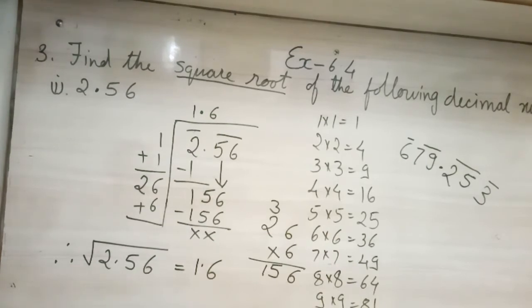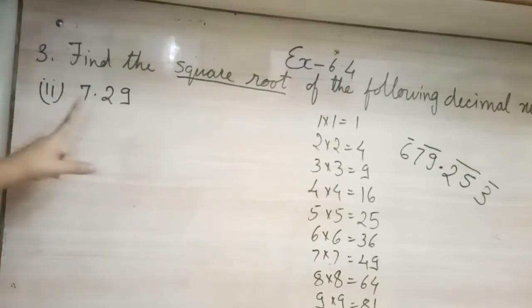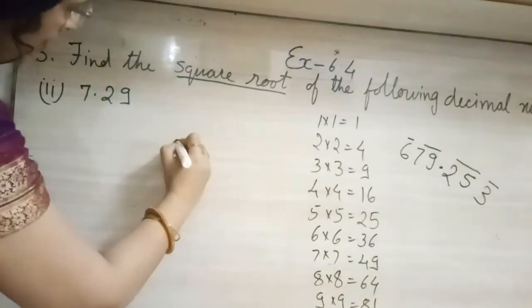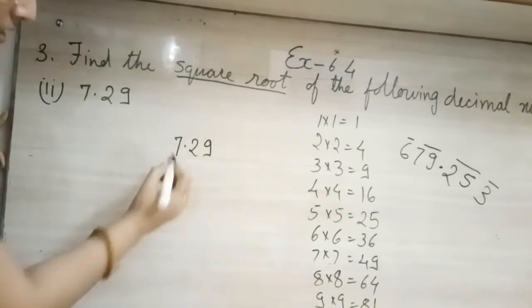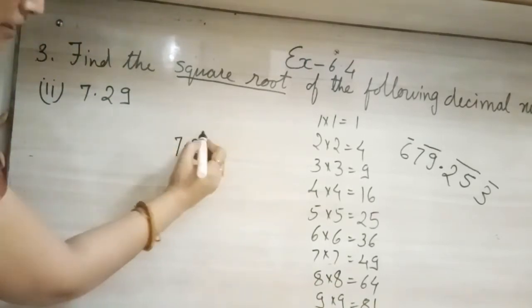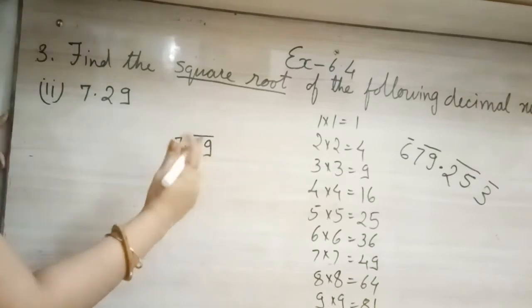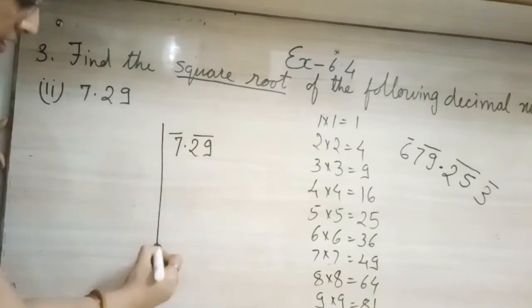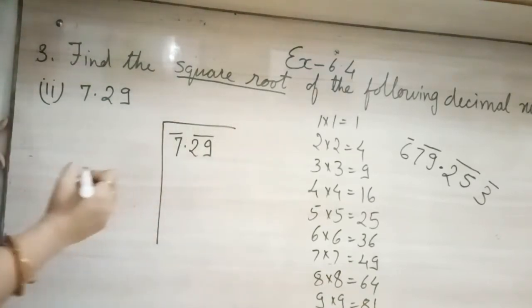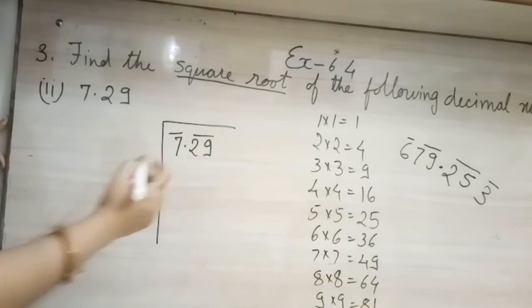Here, see again. Decimal number is there. So what are we going to do? We are going to write like this. Decimal point is your center point. From here, right side, and from here, left side. Single digit, so bar is on. Single digit. Now what are we going to do?